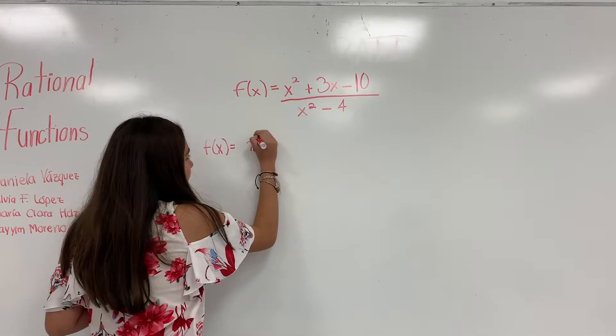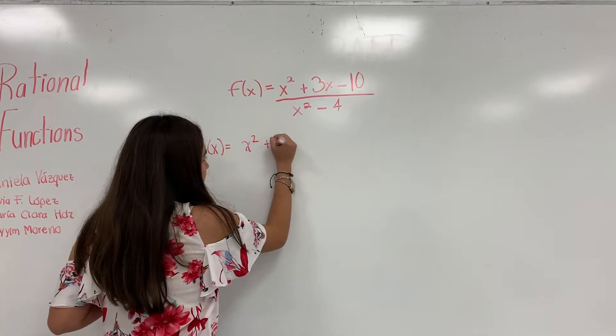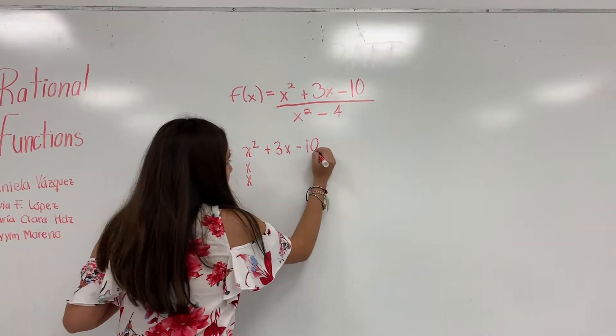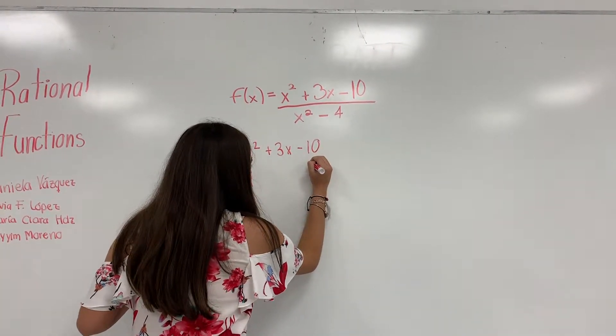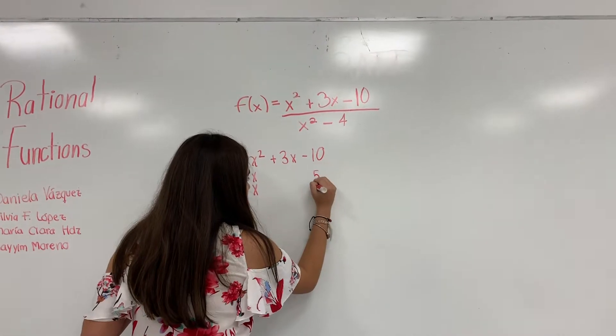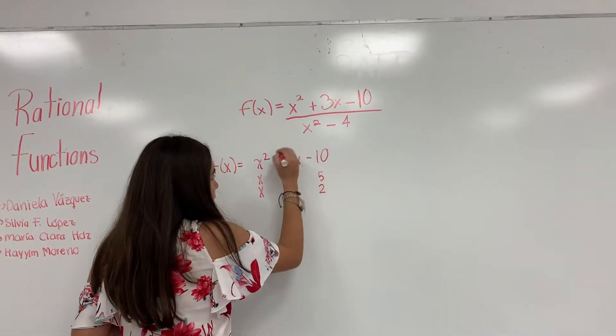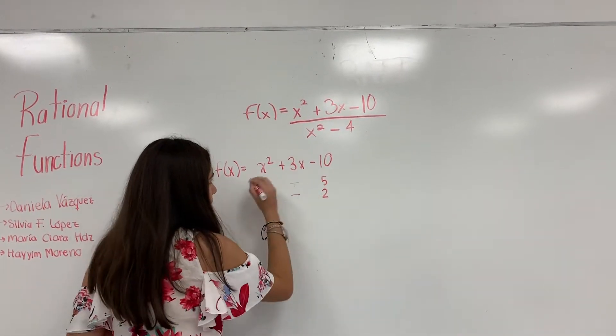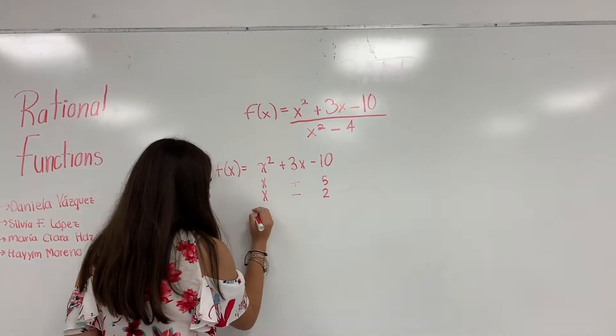Since it's a trinomial, we can factorize it as x times x. And the two numbers that give us 10 are 5 and 2. And because we need to get 3, we have to do plus 5 minus 2. So these will be our top factors.